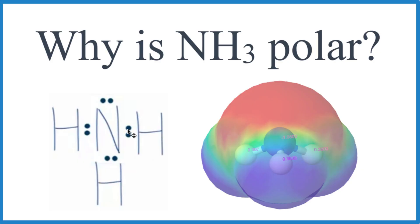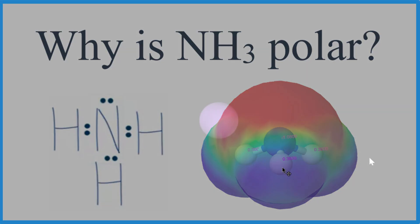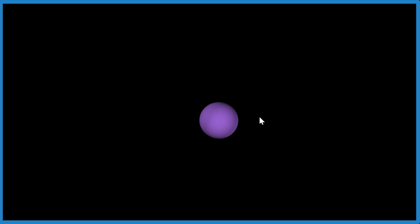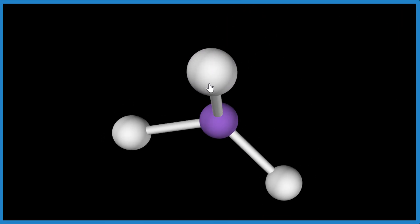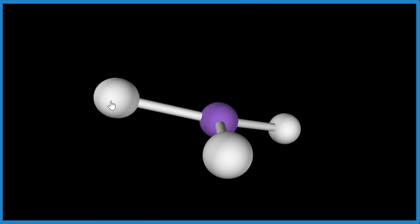Now let's look at it in three dimensions. Here's our central nitrogen atom. Let's add those three hydrogens. One, two, three, spreads out, and right now it's trigonal planar. It's all in a plane.